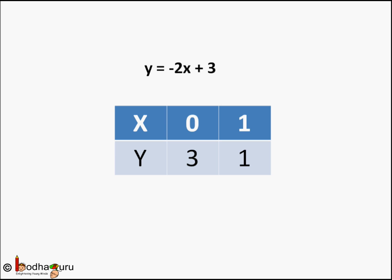Say x = 0, then y = -2 × 0 + 3, which equals 3. Say x = 1, then y = -2 × 1 + 3, which equals 1. So we got two points.